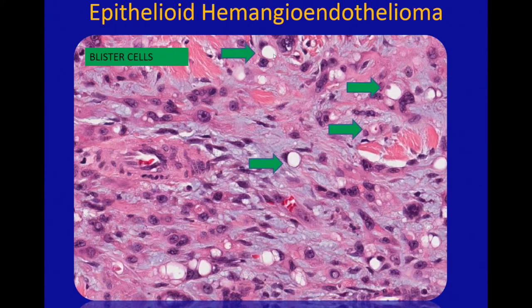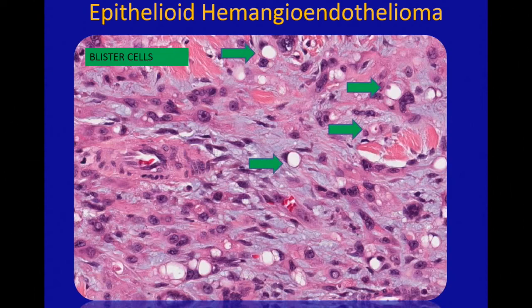I will point out that you can have vacuoles in lots of different vascular tumors — any vascular tumor with plump epithelioid-appearing endothelial cells can have vacuole formation. So just because you have a blister cell does not mean something is definitely an epithelioid hemangioendothelioma. Another important note is that these tumors usually do not make well-formed infiltrating vascular channels like angiosarcoma would, and that's a useful thing to help distinguish EHE from angiosarcoma.